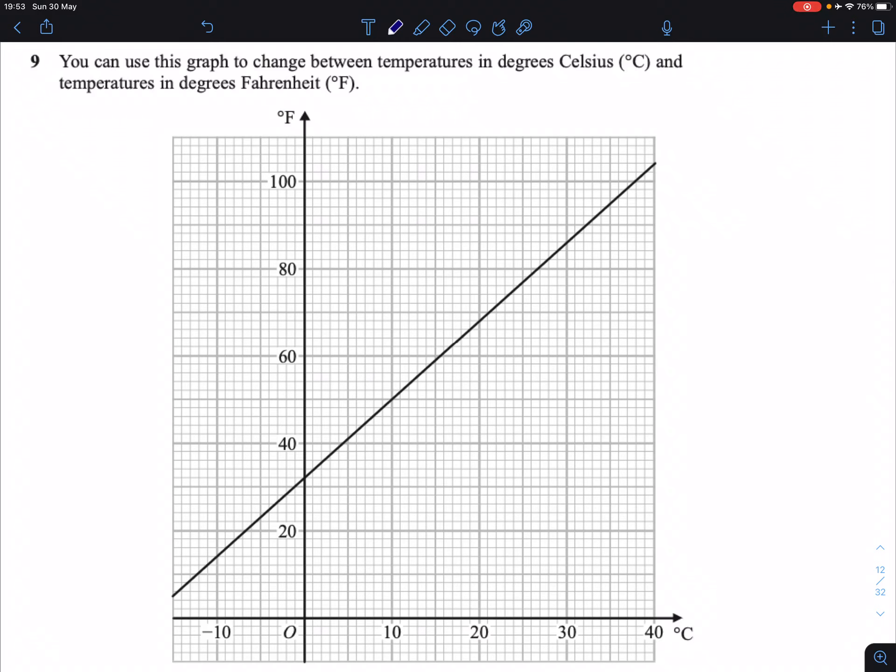Question 9. You can use this graph to change between temperatures in degrees Celsius, that's the x-axis here, and Fahrenheit, the y-axis there. For any Fahrenheit, we can go along and hit the graph and go down to get the Celsius, and vice versa, Celsius up and along to get the Fahrenheit.